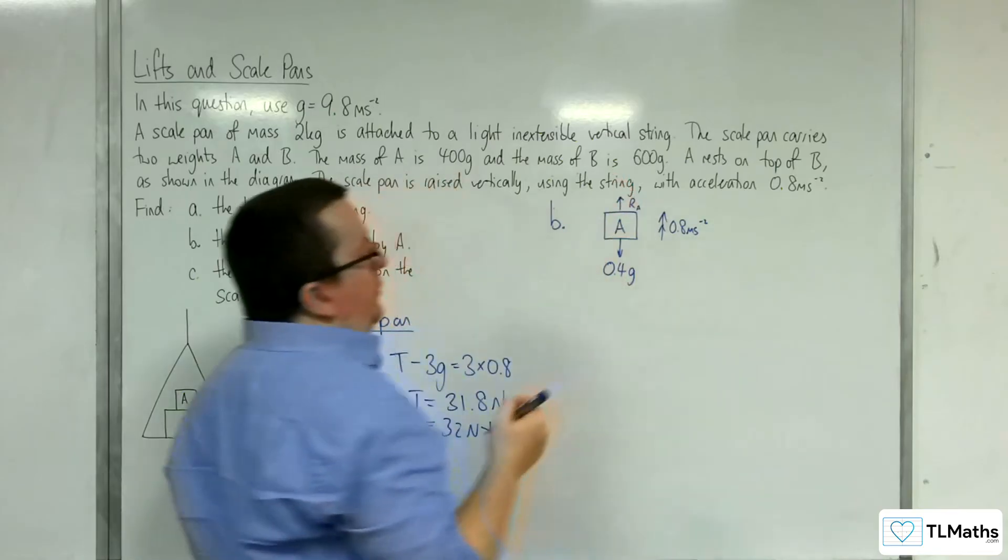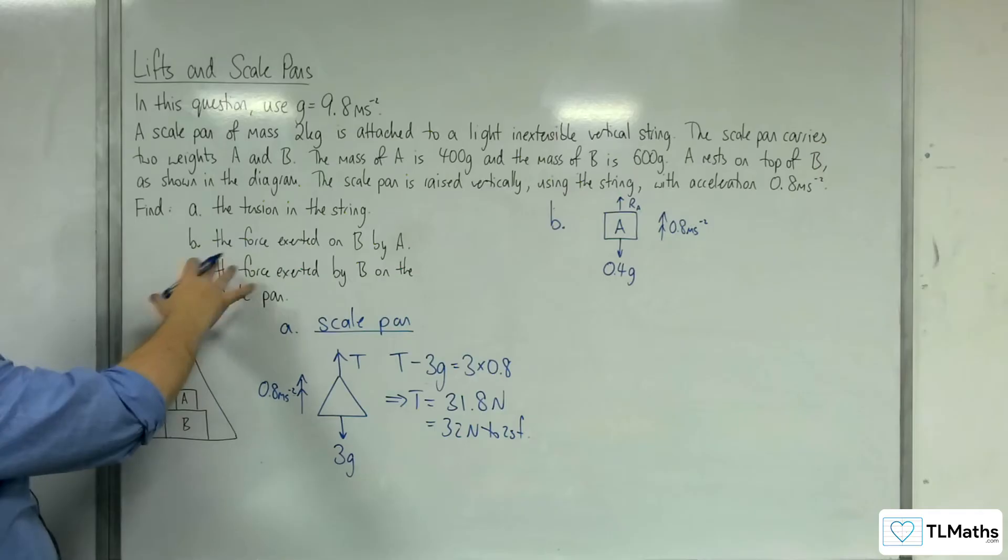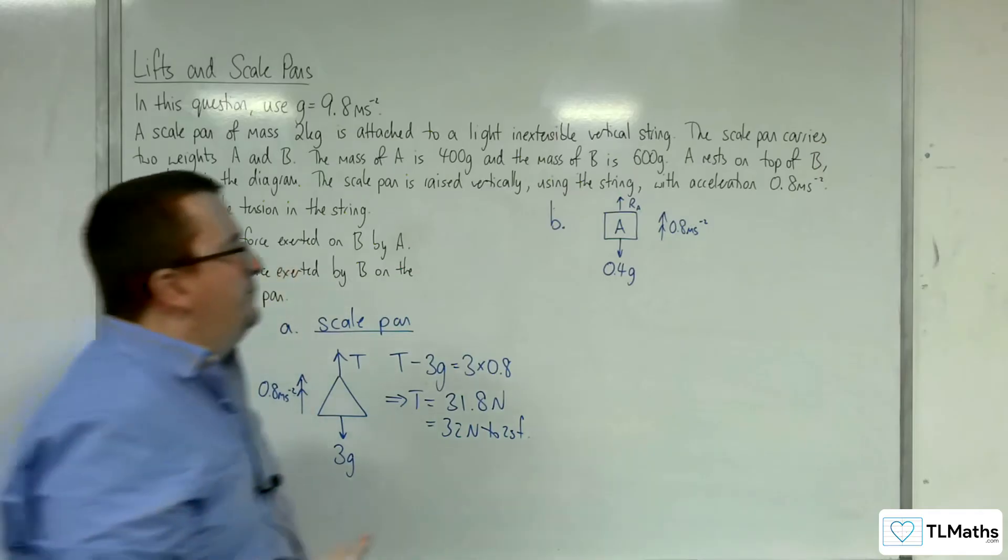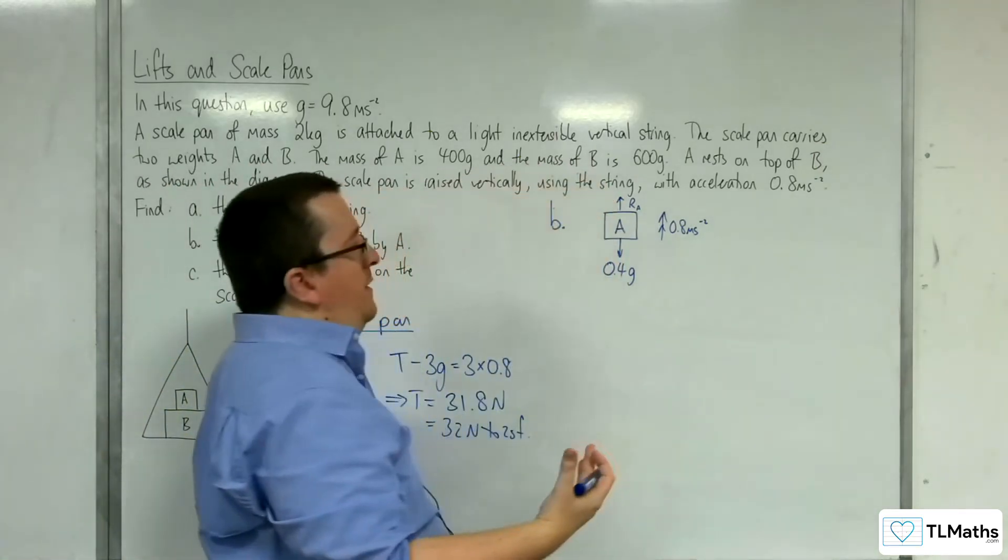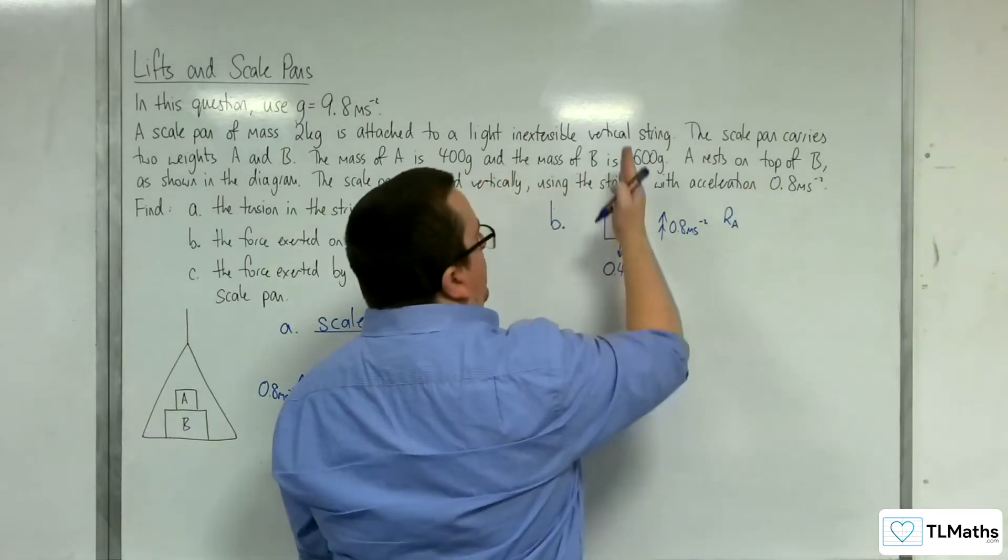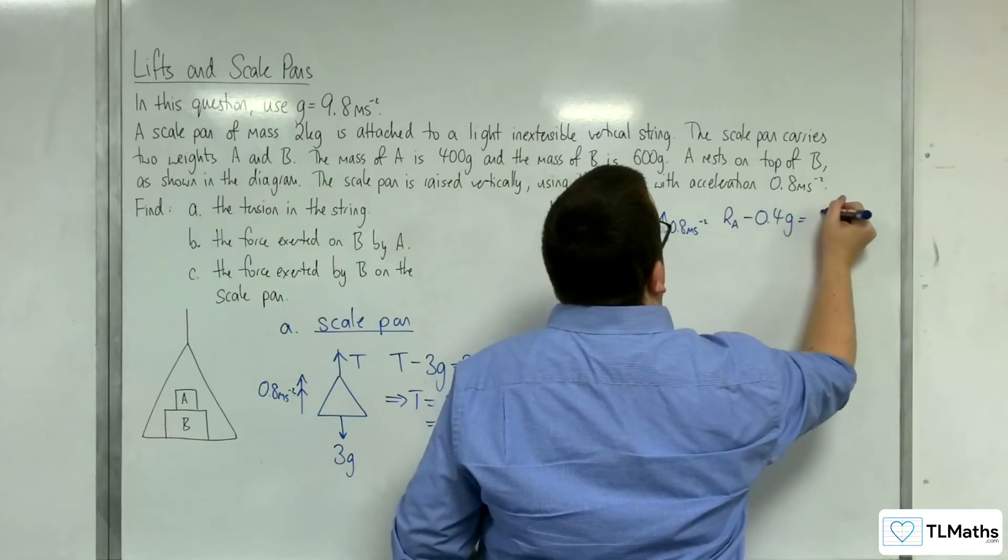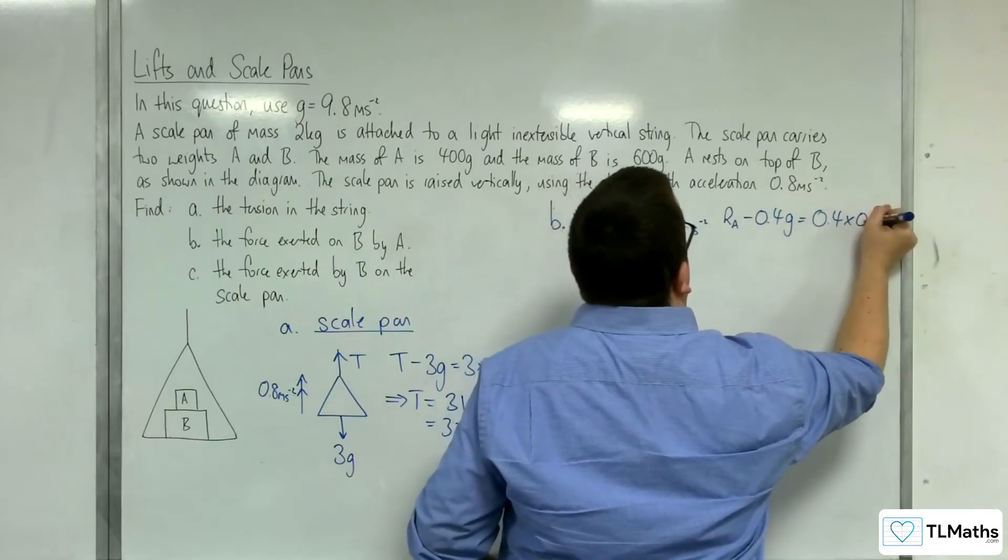So the reaction force for A will be the force exerted on B by A, just as we looked at in the previous video. So that normal reaction force, take away 0.4g, is going to be equal to the mass times the acceleration.